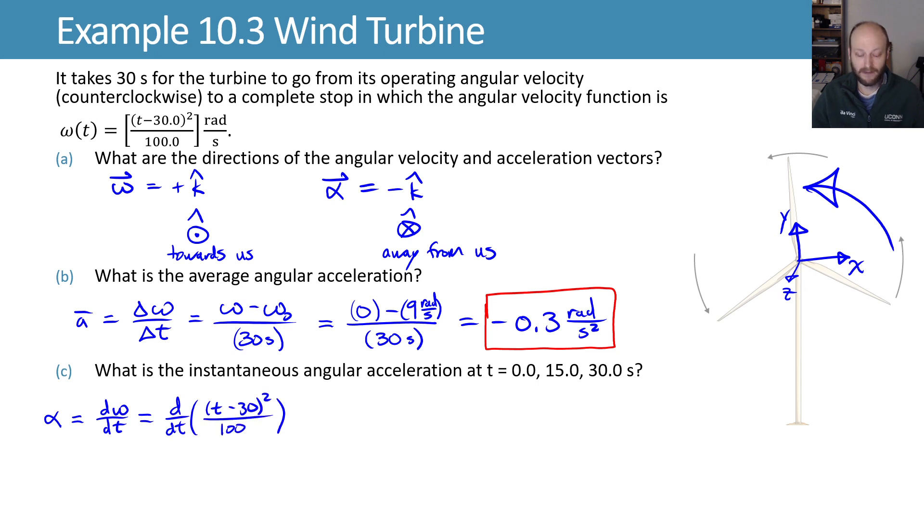We now have to take the derivative of this function. This is a nested function where we have (t-30)². We can take the derivative of this function, which is multiplying by 2 and subtracting 1 from the exponent to get 1. So we get 2(t-30)/100.